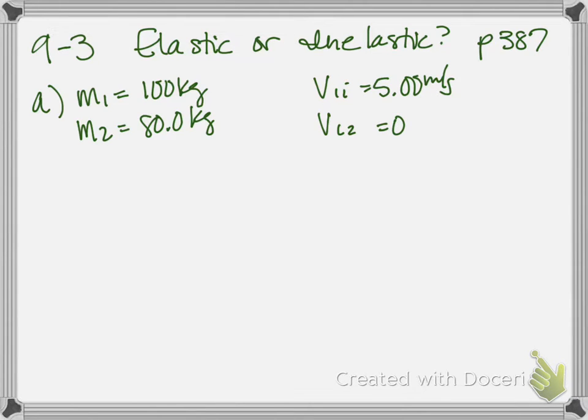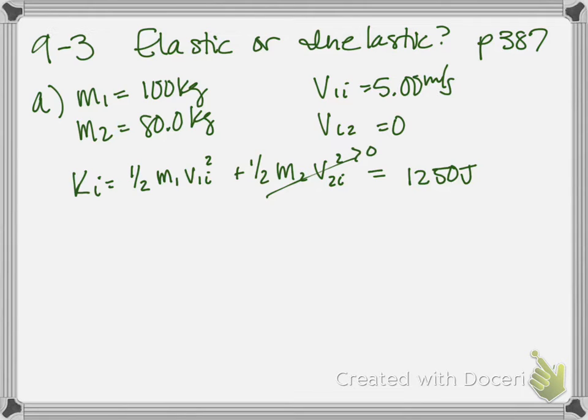So let's calculate the initial kinetic energy. That is 1/2 the mass of the first player times his initial velocity squared, plus 1/2 the mass of the second player times his initial velocity squared, which gives us an initial kinetic energy of 1,250 joules. Remember, this is 0. So there's the initial kinetic energy.